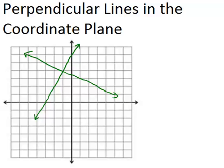In this video, we will learn about perpendicular lines in the coordinate plane. First, let's remember what perpendicular lines are. They're two lines that intersect specifically at a right angle, or a 90 degree angle, which we notate with the little square symbol.